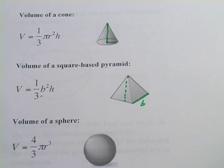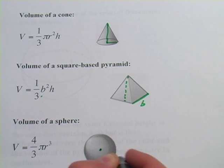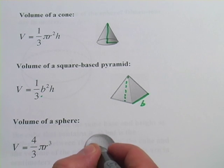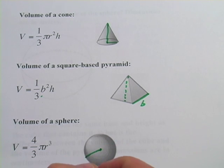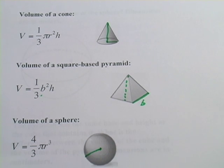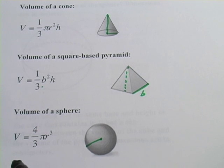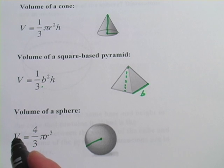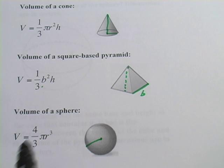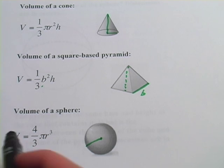The volume of a sphere is four-thirds pi r cubed, where r is the radius of the sphere — the distance from the center of the sphere to the edge. It's okay if you can't memorize these, but you should be able to look them up quickly on the internet. Just go to a search engine and type in 'volume of sphere,' 'volume of a pyramid,' or 'volume of a cone' to find these formulas. You do, however, need to be able to apply them and plug in the right numbers. We're going to try a couple of problems about that.